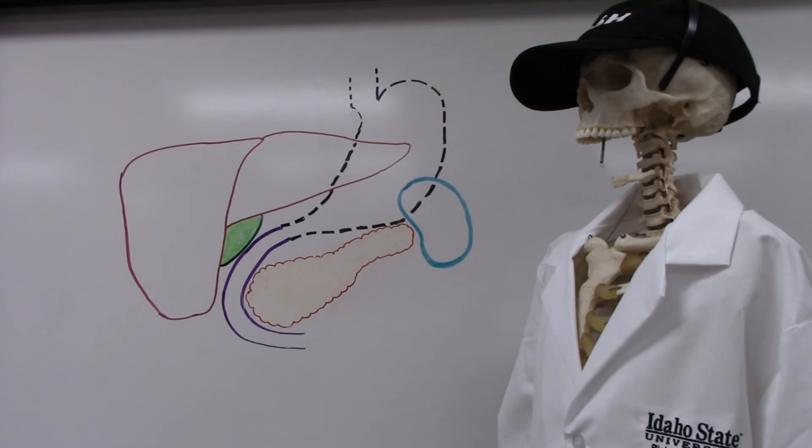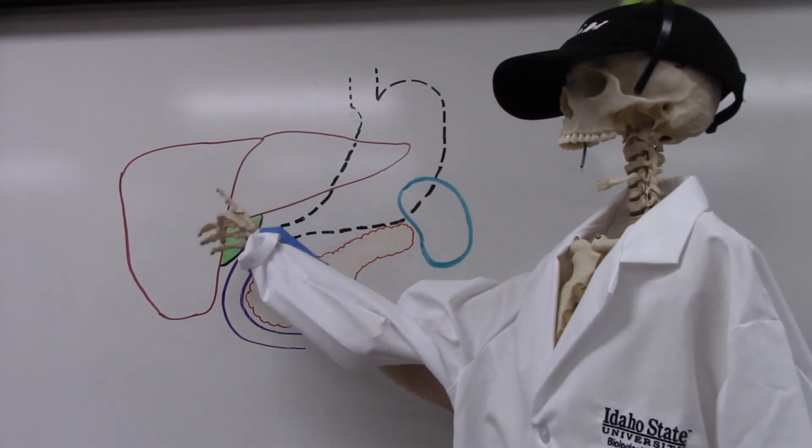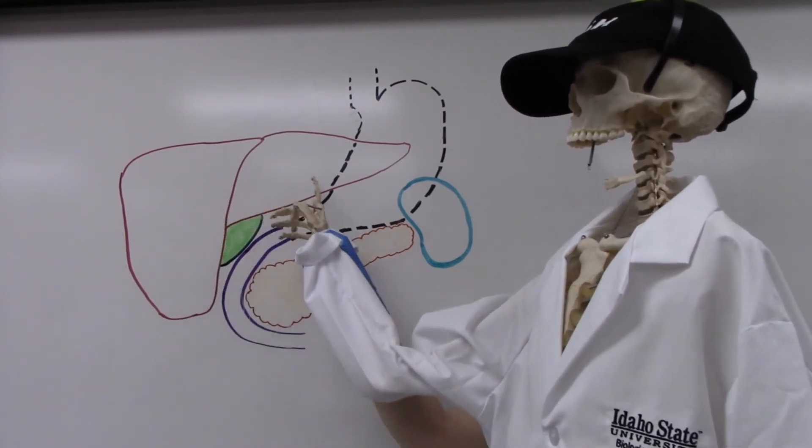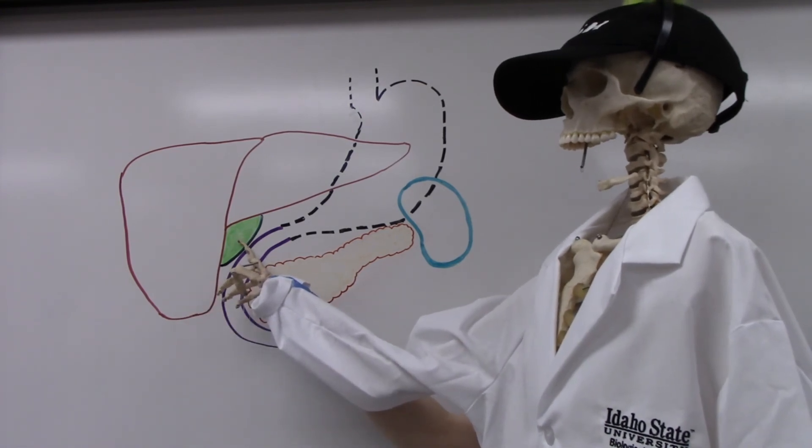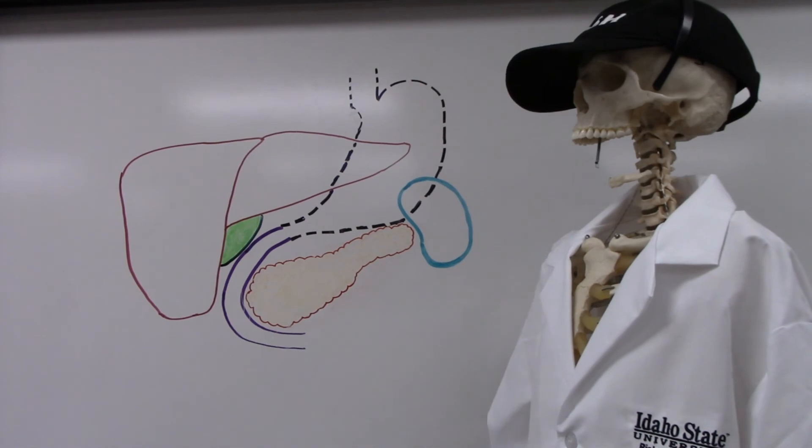The largest organ we can see in the upper right quadrant of the abdomen is the liver. The liver produces bile, which is stored in the gallbladder. The gallbladder sits inferior and posterior to the liver.